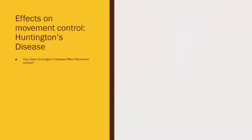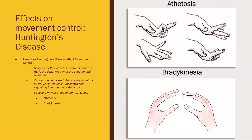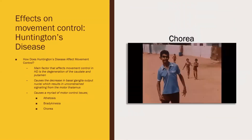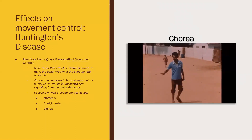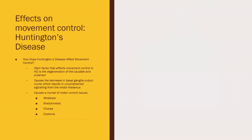The main factor affecting movement control in HD is the degeneration of the caudate and putamen, resulting in neuronal death. This degeneration causes a decrease in basal ganglia output nuclei, which results in unconstrained signaling from the motor thalamus. This unconstrained signaling causes motor issues such as athetosis and bradykinesia, which involves slow involuntary movements of the hands and limbs. The main two are chorea — unpredictable twitch-like involuntary movements of the trunk, arms, and face — and dystonia, which is involuntary contraction of the muscles in a twist-like motion. These symptoms gradually worsen as more neuronal cells die and the striatum degenerates.